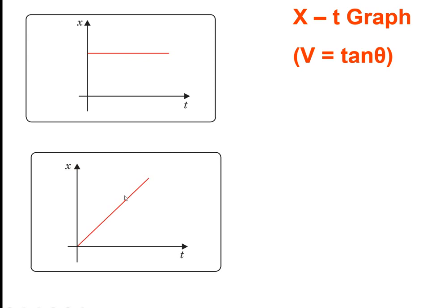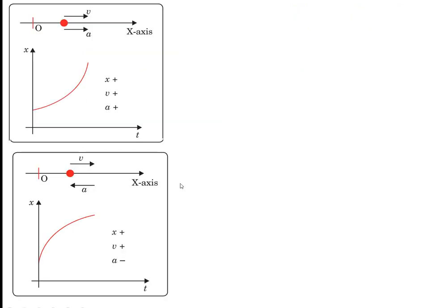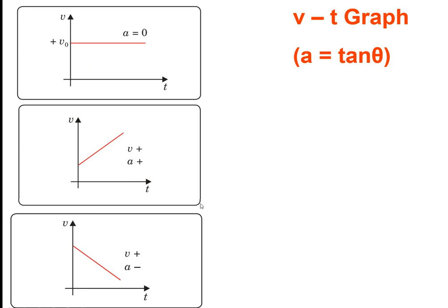On the x-t graph, slope gives velocity. If slope is 0, velocity is 0 — object is at rest. If slope is constant, velocity is constant — uniform motion with equal distances in equal time intervals. If slope is increasing, velocity is increasing — acceleration is present. If slope is decreasing, velocity is decreasing — this is retardation.